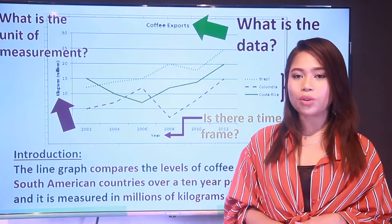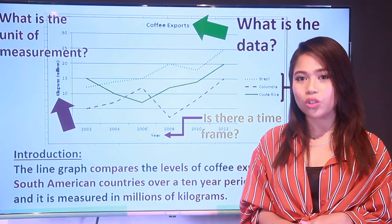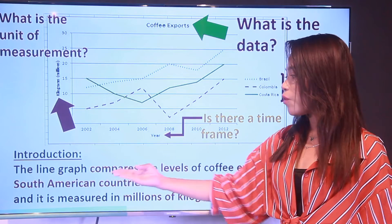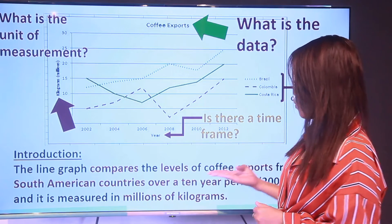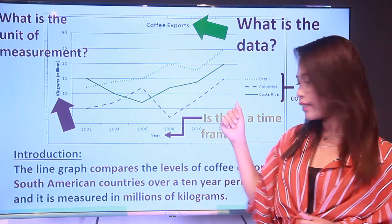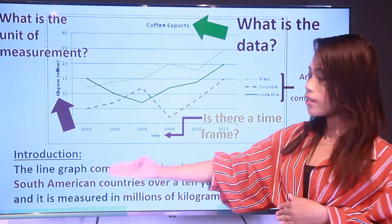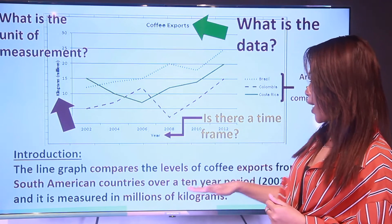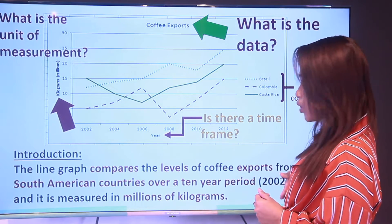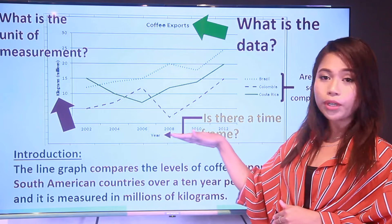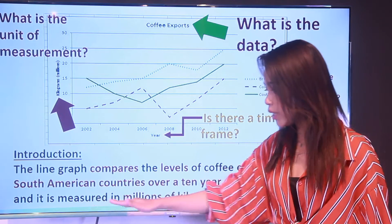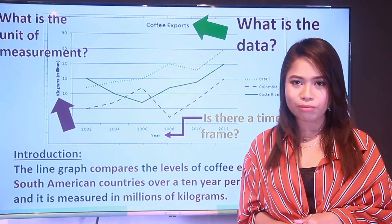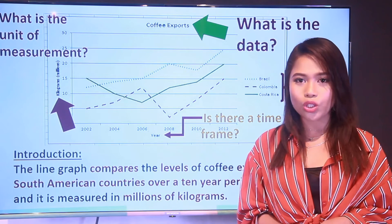Now once you have analyzed the graph, you are ready to write an introduction. Here is an example introduction: 'The line graph compares the levels of coffee exports' — that's our data — 'from three South American countries' — that's our comparison — 'over a 10-year period, 2002 to 2012' — that's our time frame — 'and it is measured in millions of kilograms' — that's our unit of measurement. So you already have a full introduction.